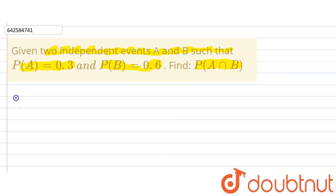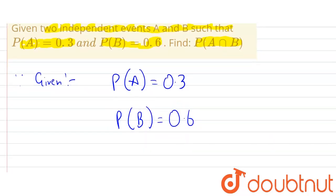So let's write the given part. Given that P(A) is equals to 0.3 and P(B) is equals to 0.6.